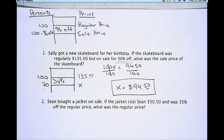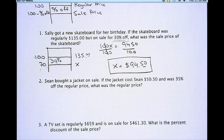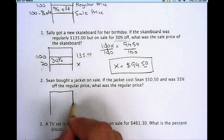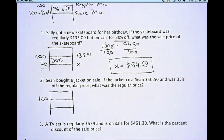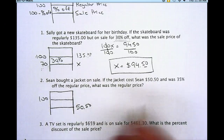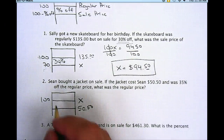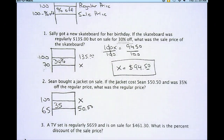Let's try it a couple other ways. That first problem I was finding the sale price. Sometimes they'll give you the sale price and you have to find the regular price — that's example number 2. Sean bought a jacket on sale. If the jacket cost Sean $50.50 and it was 35% off the regular price, what was the regular price? I always start by setting up my thermometer. I know the cost on sale was $50.50. I'm trying to find the regular price, so that's my X. And it was 35% off, so I put 35 there.